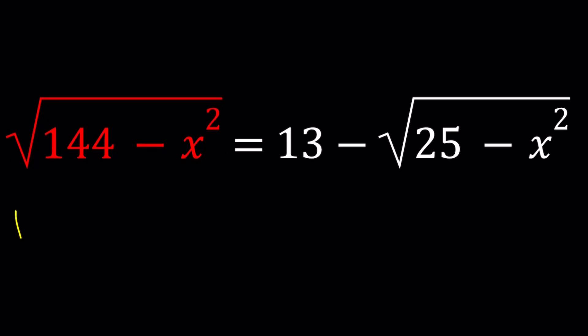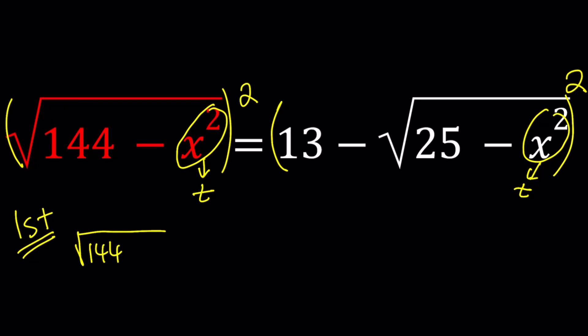My first method involves getting rid of the radicals by squaring both sides. It's already in good shape because we have the radicals on different sides. Let's square both sides. And to make our life a little easier, we can replace x squared with something like a different variable. Since we don't have any x's, we can call this t. This will also be t.